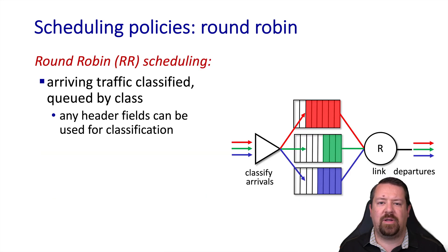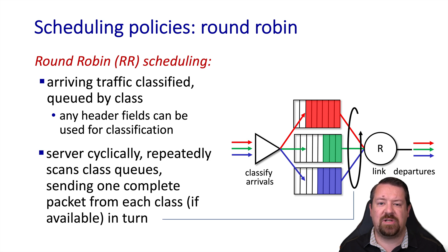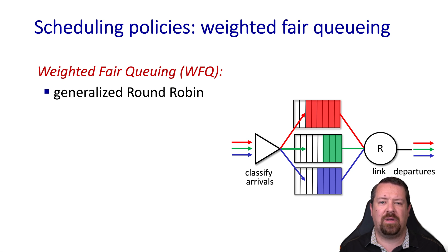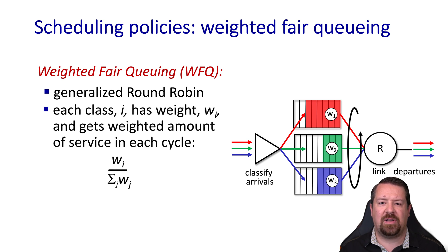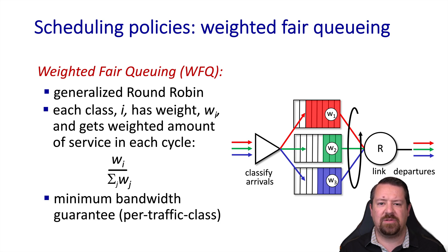An alternative to priority queuing is round robin scheduling. Again, we break up traffic by classes, but the output scheduler just takes one packet from each queue in turn. So this can be used to split the available service equally over multiple classes of traffic. A modification to round robin called weighted fair queuing enables us to combine the idea of priority and round robin scheduling. So in this case, each class has some weight wi and gets a weighted amount of service in each cycle. So while the high priority queue might get to send three packets and the medium priority queue send two packets and the low priority queue only send one packet within a given cycle, none of the classes will be starved completely like we saw with pure priority queuing. This allows us to not just split the service amongst the three classes but also makes a minimum bandwidth guarantee for each class of service.